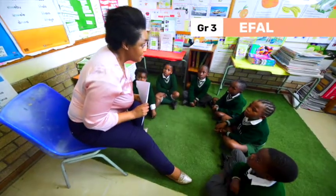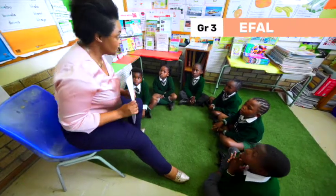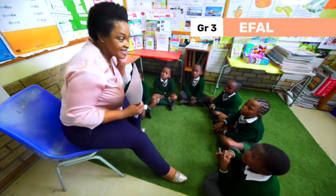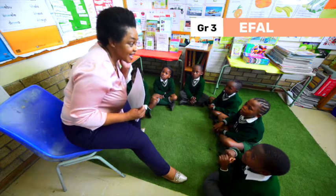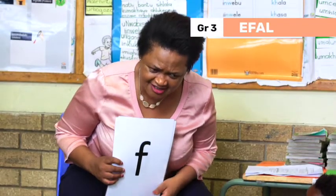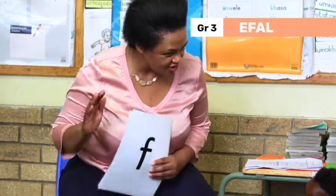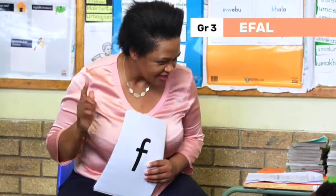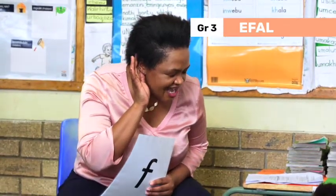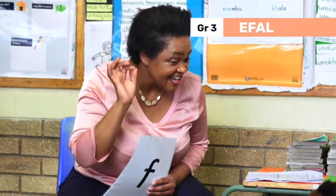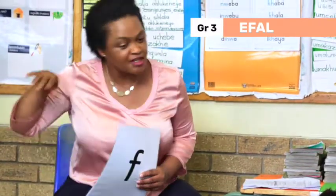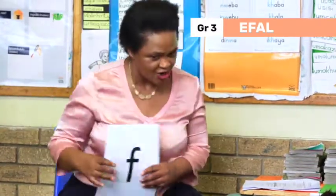Now, we're going to look at the letters and say the sounds, but in English — not in isiXhosa. We're going to try and do the sounds in English. First, I'm going to go slowly and then I'm going to go fast.